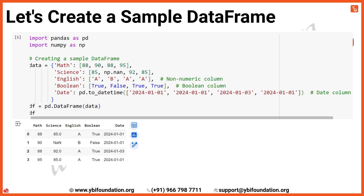Here's what each column represents. Math contains numeric values representing scores in the math subject. Science also contains numeric scores, but one value is missing, represented by np.nan to indicate a missing value. English is a non-numeric column containing string values, specifically letter grades. Boolean contains Boolean values which indicate true or false. Date contains date values converted into a pandas datetime format using the pd.to_datetime function. The dates represent January 1, 2024 for most rows and January 3, 2024 for one of the rows.